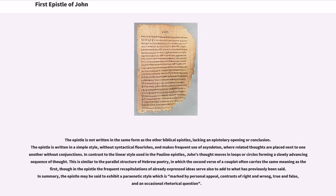This is similar to the parallel structure of Hebrew poetry, in which the second verse of a couplet often carries the same meaning as the first, though in the epistle the frequent recapitulations of already expressed ideas serve also to add to what has previously been said. In summary, the epistle may be said to exhibit a parenetic style which is marked by personal appeal, contrasts of right and wrong, true and false, and an occasional rhetorical question.